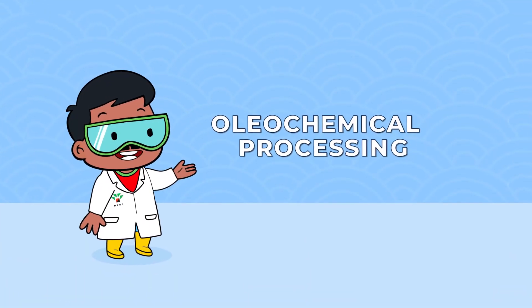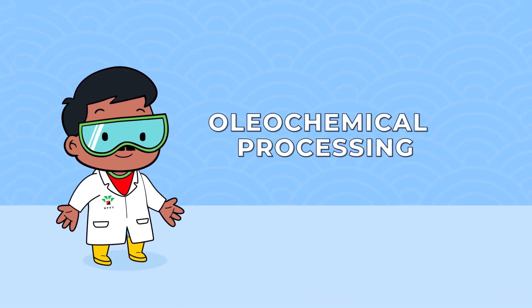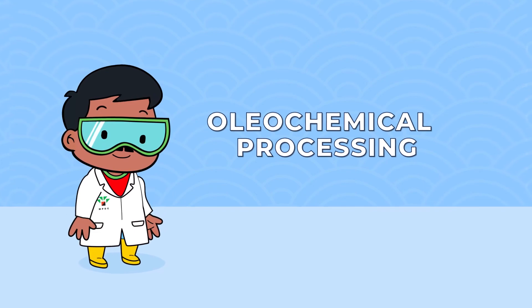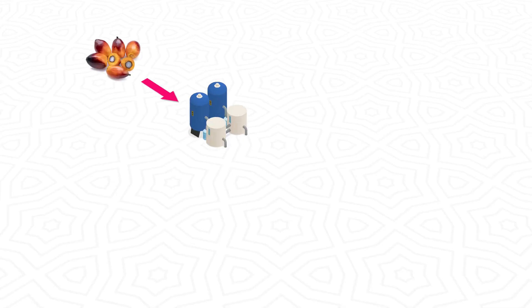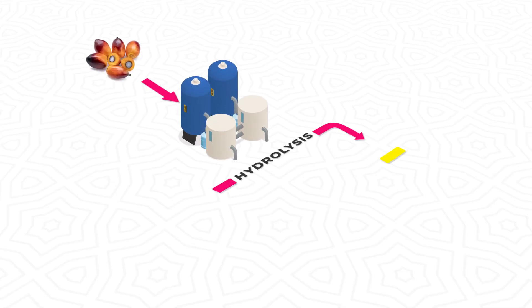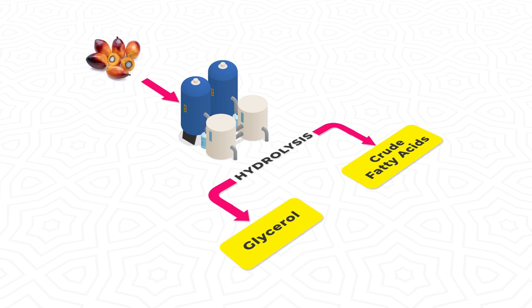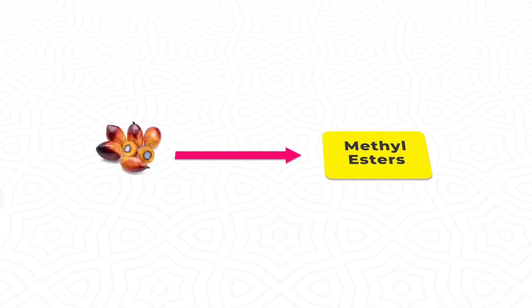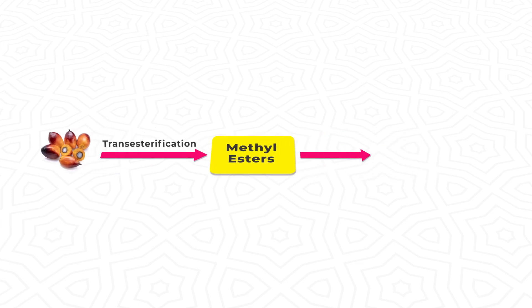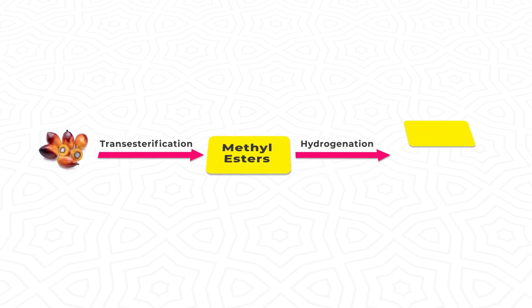Let's look at the processing of oleochemical products. Crude fatty acids and glycerol are produced through a high temperature and high pressure fat splitting method known as hydrolysis. Methyl esters are produced through transesterification, followed by high temperature and high pressure hydrogenation to produce fatty alcohols and fatty amines.